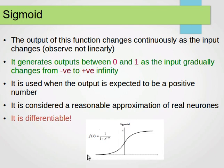If the input is minus infinity and it's going towards positive infinity, then the value of the output changes. So this is the input: negative infinity this way, positive infinity that way. And when it changes, the output also changes. It generates output between 0 and 1 as the input gradually changes from negative to positive infinity.